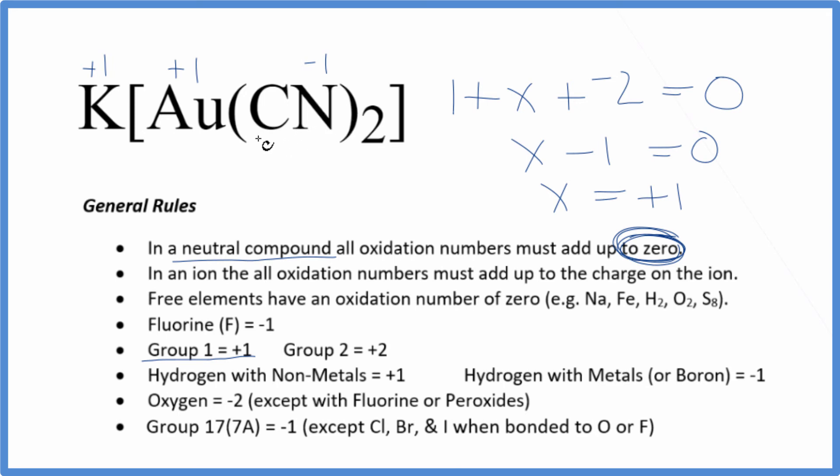If you need to find the oxidation number for the carbon and nitrogen, there's a link in the description. This is a little tricky because of carbon and nitrogen, and we need to look at the electronegativity of each element. This is Dr. B with the oxidation number for the gold in potassium dicianoaurate. Thanks for watching.